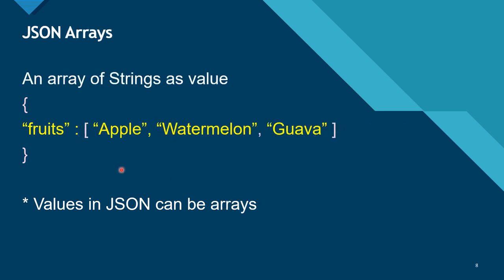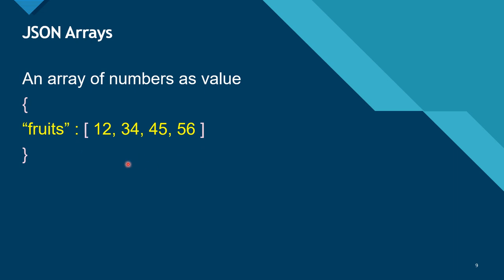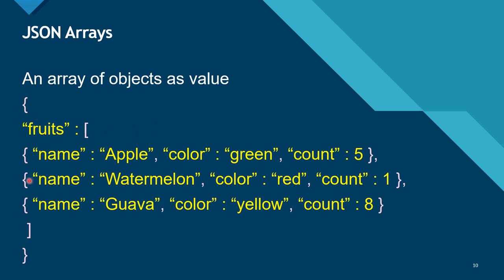JSON arrays start with a square bracket and end with a square bracket. Here the value of the key 'fruit' is a JSON array of strings, because these are strings separated by commas. Here is another example where the array is an array of numbers separated by commas. And in this example, it is an array of objects — the first object starts and ends with curly brackets, then a comma, then the second object, then a comma, then the third object, then the closing square bracket.